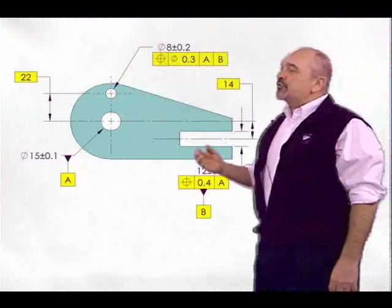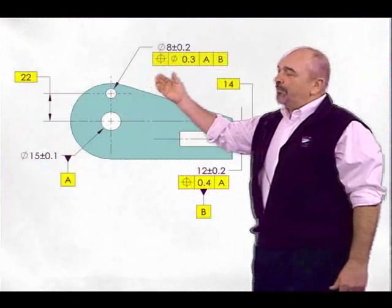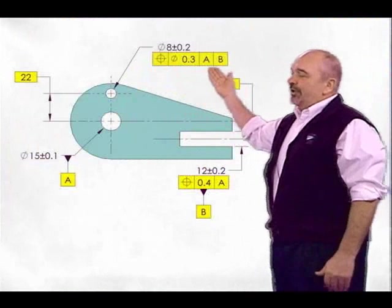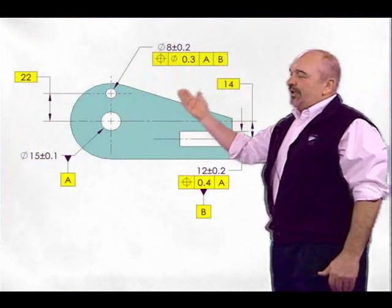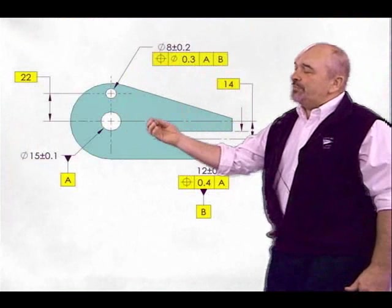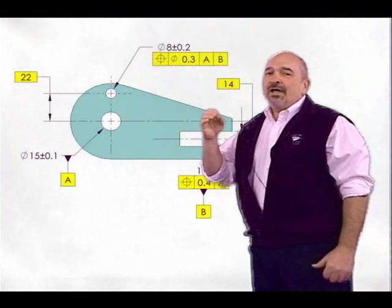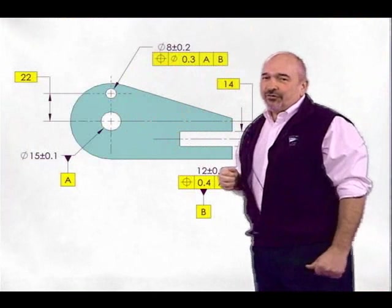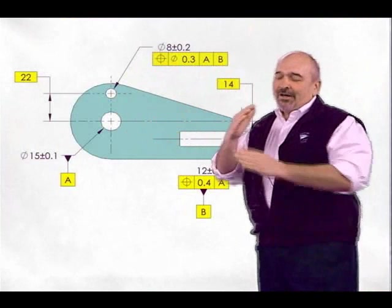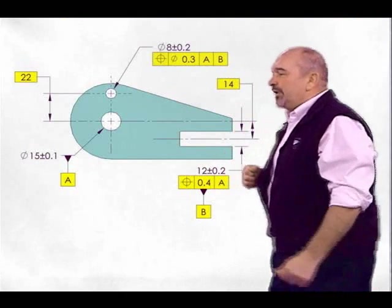On this drawing we have a position tolerance on the 8 millimeter hole. The primary datum feature A is regardless of feature size, and it's this 15 millimeter hole. So this means I would fill it with the largest inscribed cylinder, and the axis of that cylinder would be my primary datum, which is the intersection of two mutually perpendicular planes.